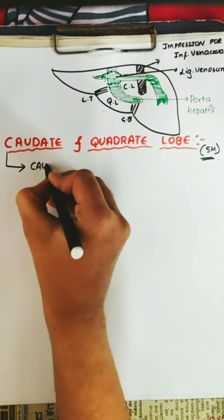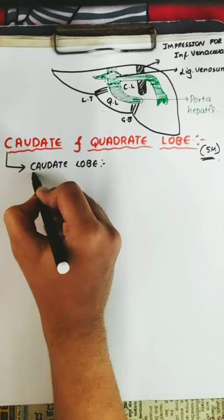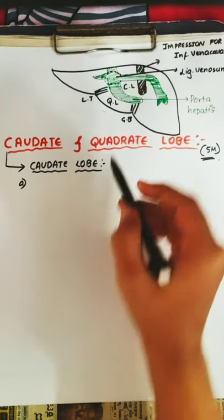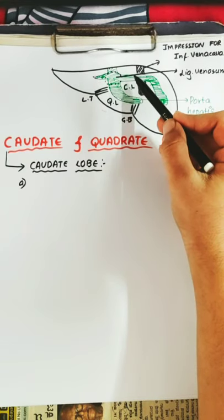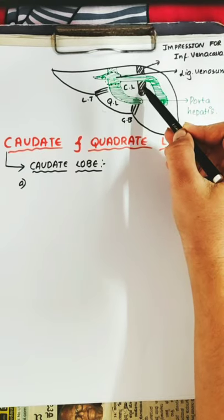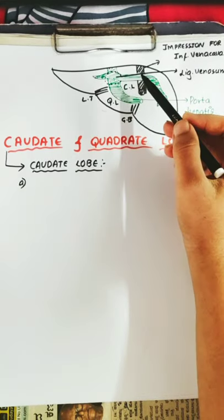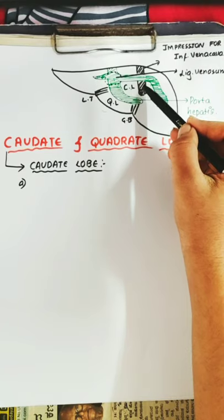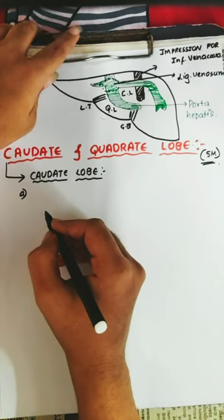First one is the caudate lobe. We will see all the borders and boundaries of it. So this is the caudate lobe. Now we will see the superior border, inferior border, anterior border, and posterior border — or you can say: superior border, inferior border, anterior or left border, and right border. So let us see the structures in detail.